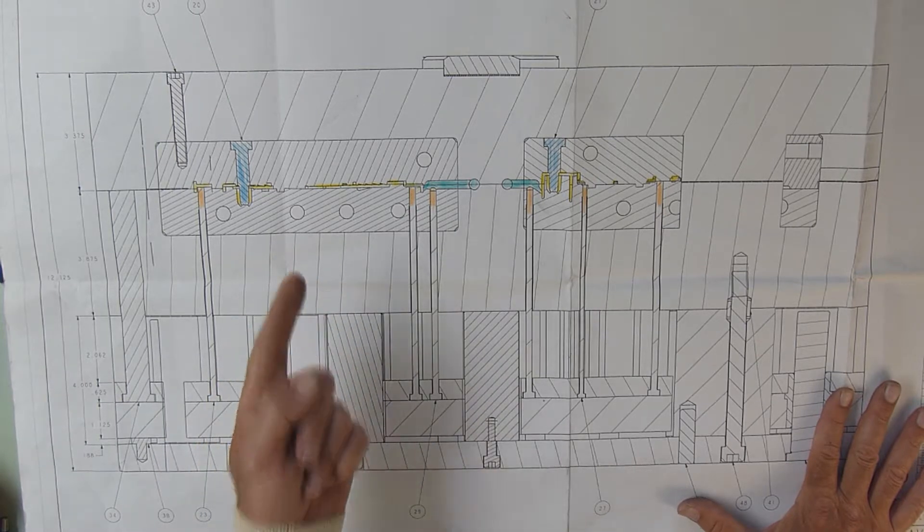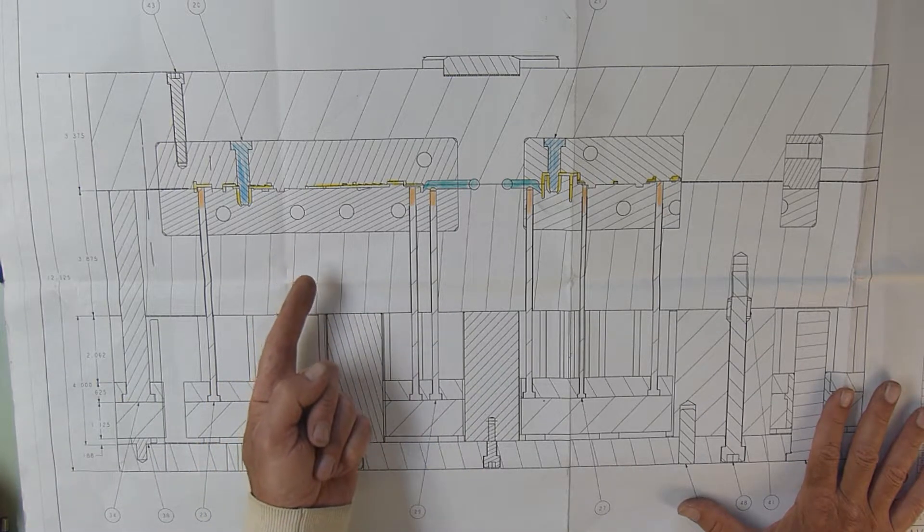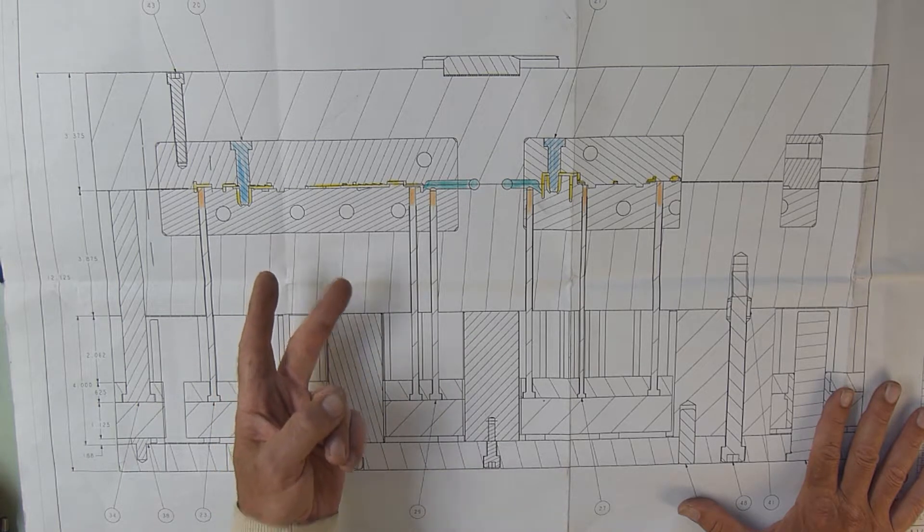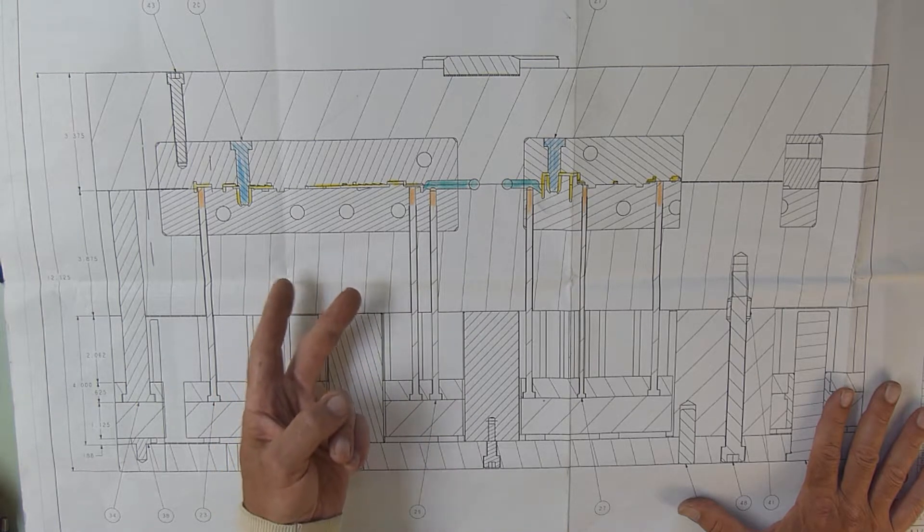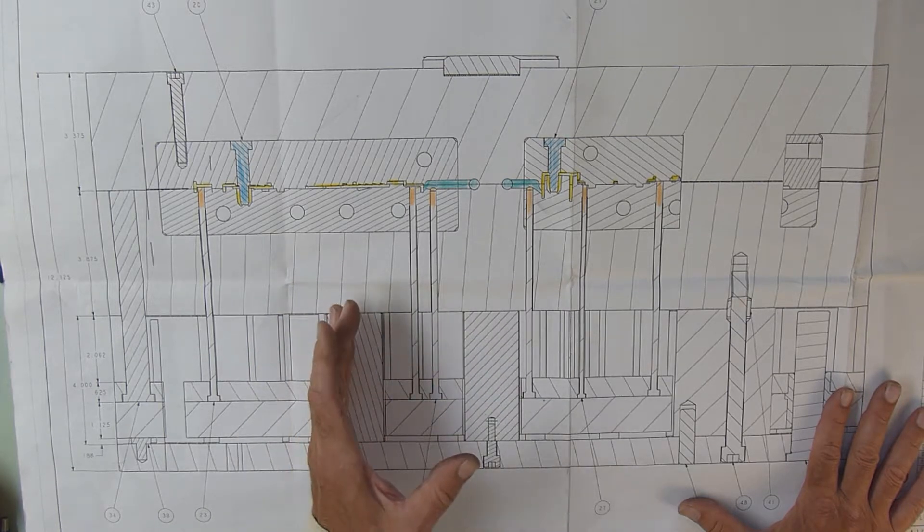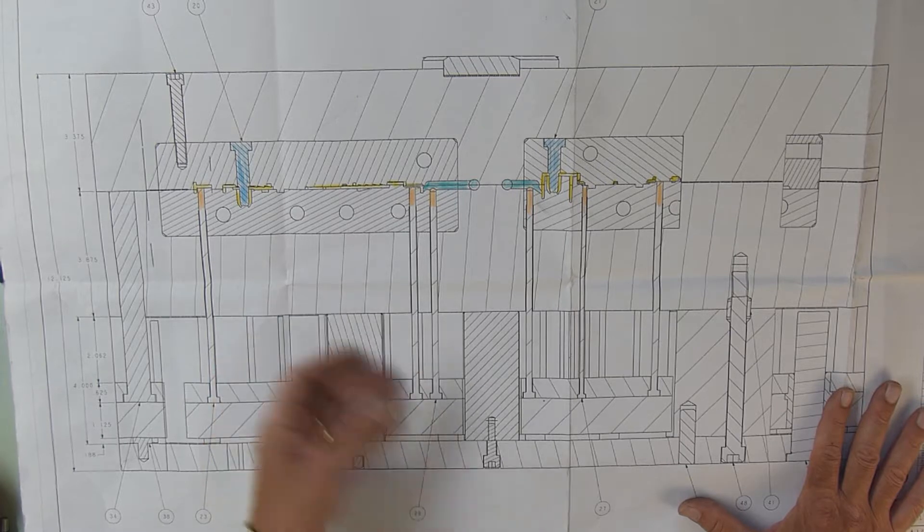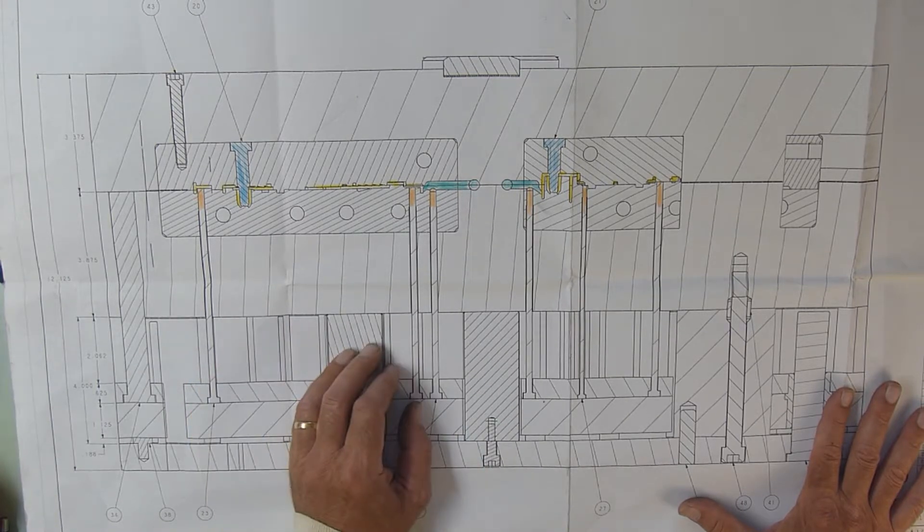So the three main components of an injection mold: One, you have to get the plastic in—the injection and gating process. Two, you have to cool it so the plastic sets—it doesn't sit there molten, so you get a hardened part. The better you cool it, the faster the mold runs, and the faster the cycle time is, the more money everybody makes.